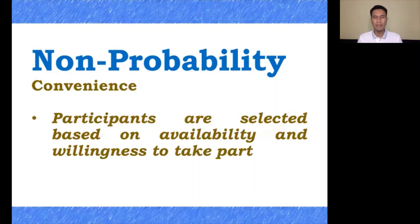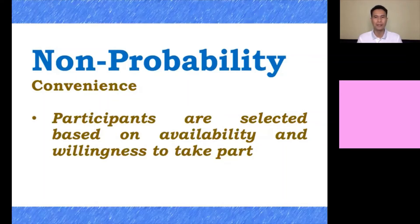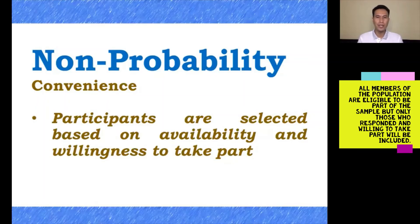The next non-probability sampling is convenience sampling. Here, participants are selected based on availability and willingness to take part. The members of the population are eligible to be the sample, but only those who responded and are willing are counted. You use the participants who are available and willing to take part in your research.